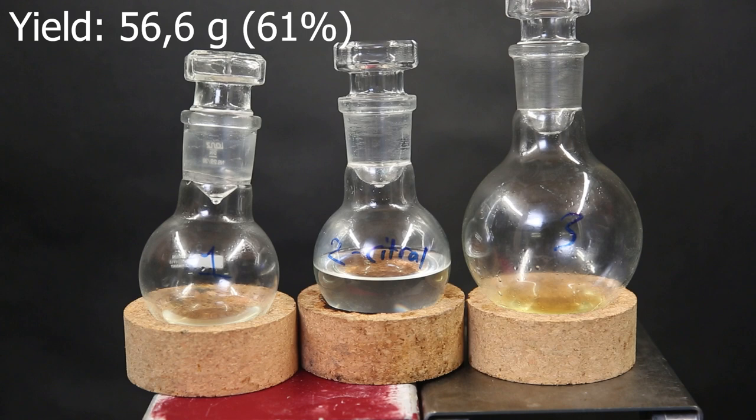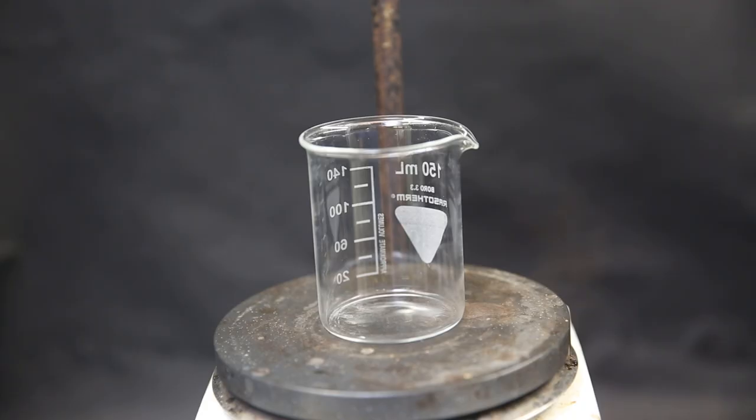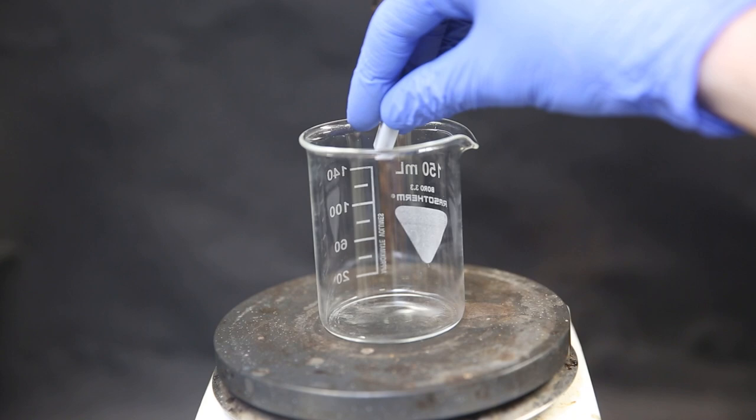But before that, I will prepare some solutions. So I set up a beaker with a stir bar and add in 55 mils of absolute ethanol. Then I add in 2.54g of sodium metal. This will react with the ethanol and make a solution of sodium ethoxide.